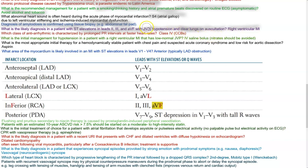Which class of antiarrhythmic is characterized by prolonged PR intervals at faster heart rates? That would be class 4, calcium channel blockers. What is the initial management for hypotension in a patient with right ventricular MI with low-normal JVP? That would be IV saline bolus. Remember that nitrates need to be avoided because you don't want to tip that patient into further hypotension.